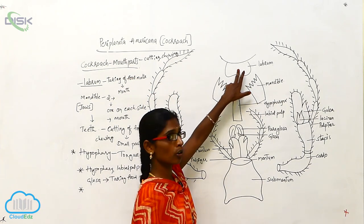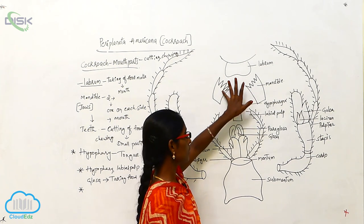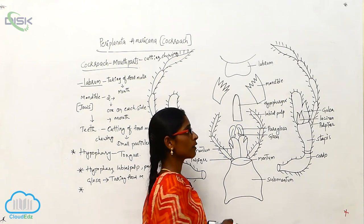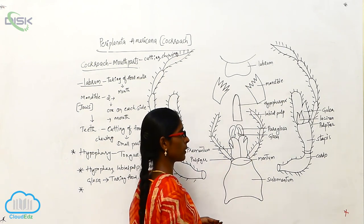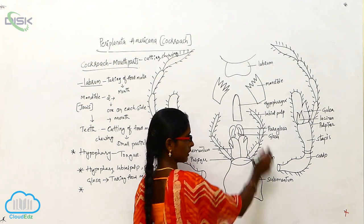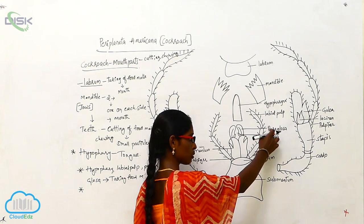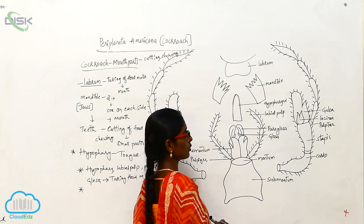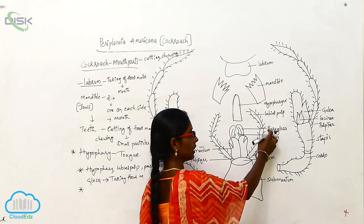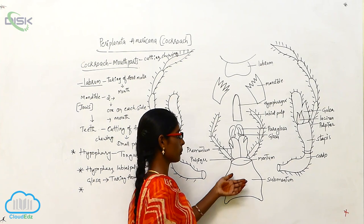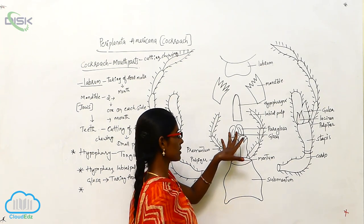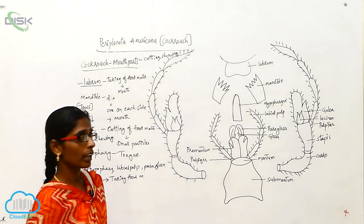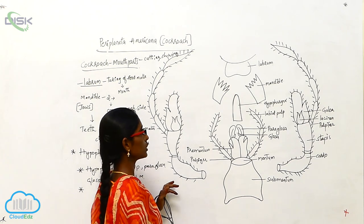In summary: the labrum is used for taking food material into the mouth. The mandibles act like teeth and are used for cutting food material from large particles to small particles. The hypopharynx acts like the tongue. The labial pulp, paraglosa, and glosa act like hands to help take food material in. The mentum and submentum form the base of these organs. The cardo, stipes, palfifer, lacinia, and galea are also used for taking food material into the mouth.